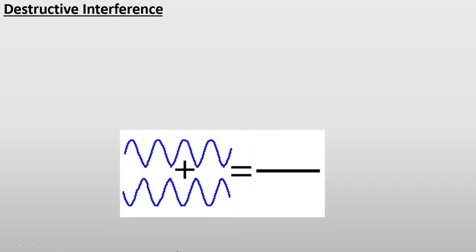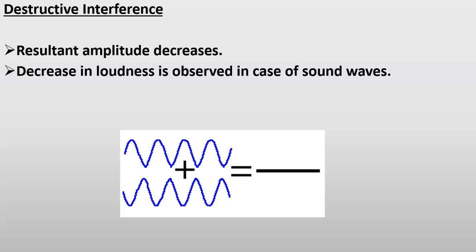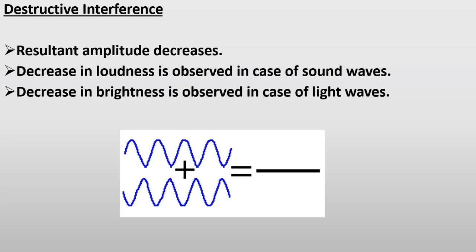Doosri type hai destructive interference. Do waves agar is tarah se superpose karein ke ek wave ka crest doosri wave ke trough par fall kare, to resultant wave mein ye dono waves ek doosri ke effect ko cancel karengi. Resultant amplitude decreases. Agar do sound waves destructively interfere karein to loudness decrease karegi, aur agar do light waves destructively interfere karein to brightness of light decrease karegi.